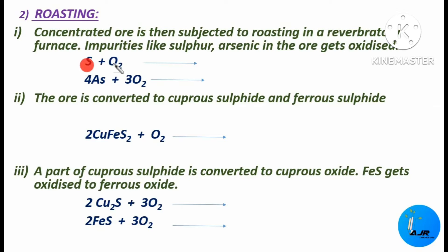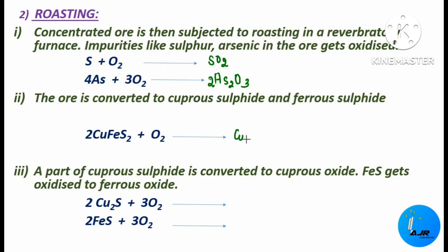When sulfur is oxidized in the presence of oxygen, it gets converted to sulfur dioxide. Arsenic similarly gets converted to arsenic trioxide, As2O3. To balance this equation, we have four arsenic atoms, so we add a coefficient of two. Also during roasting, CuFeS2 — copper iron sulfide — gets converted to cuprous sulfide (Cu2S) and ferrous sulfide (FeS), along with sulfur dioxide.